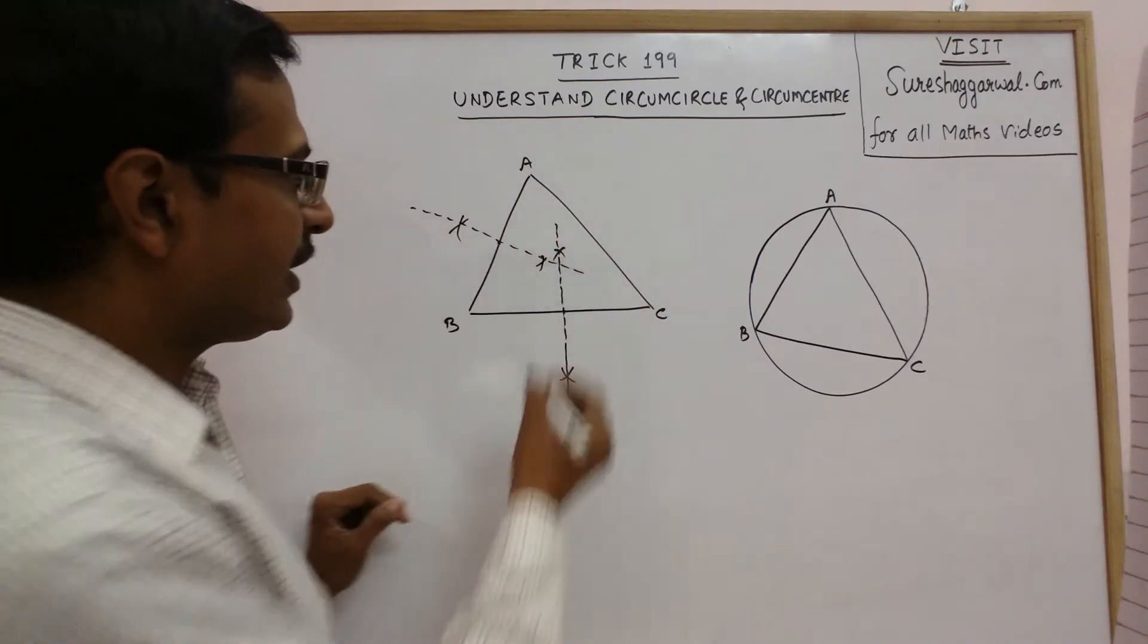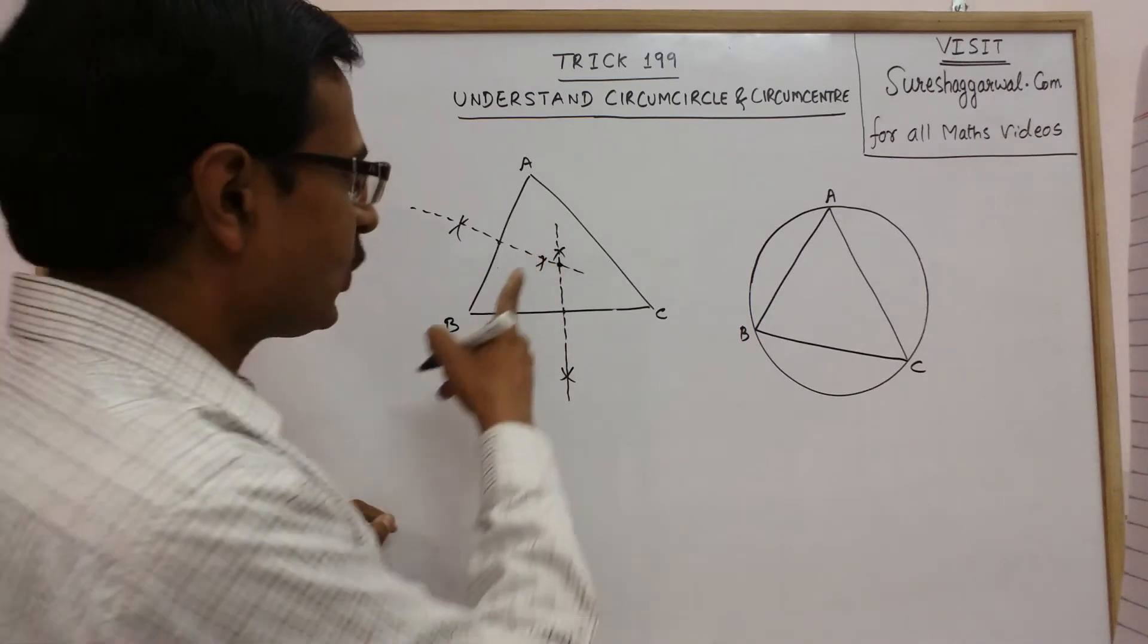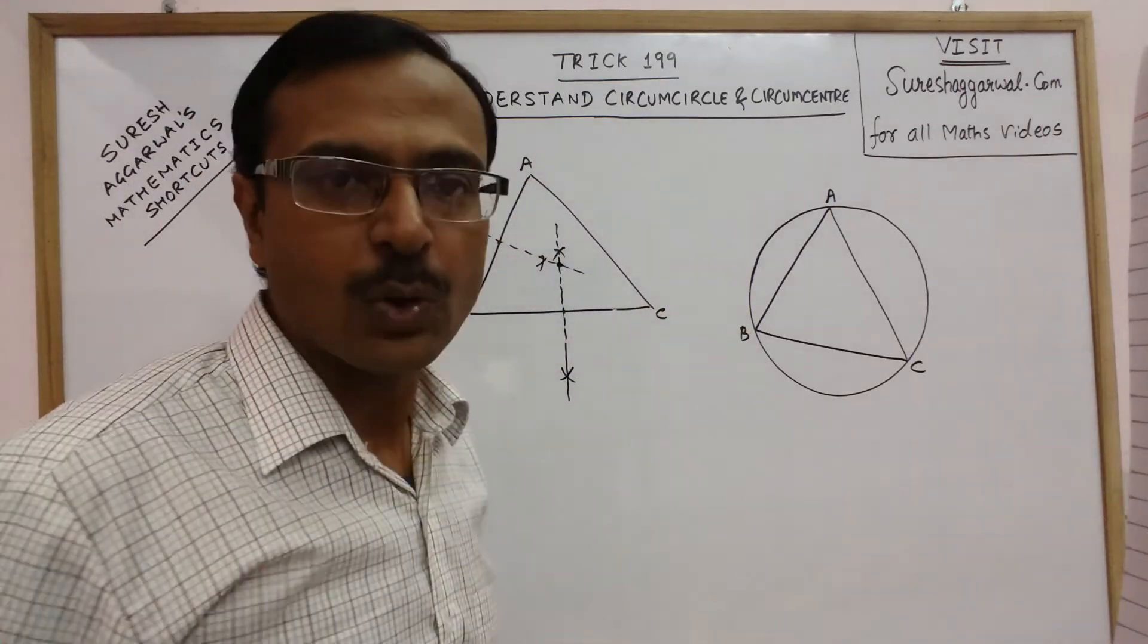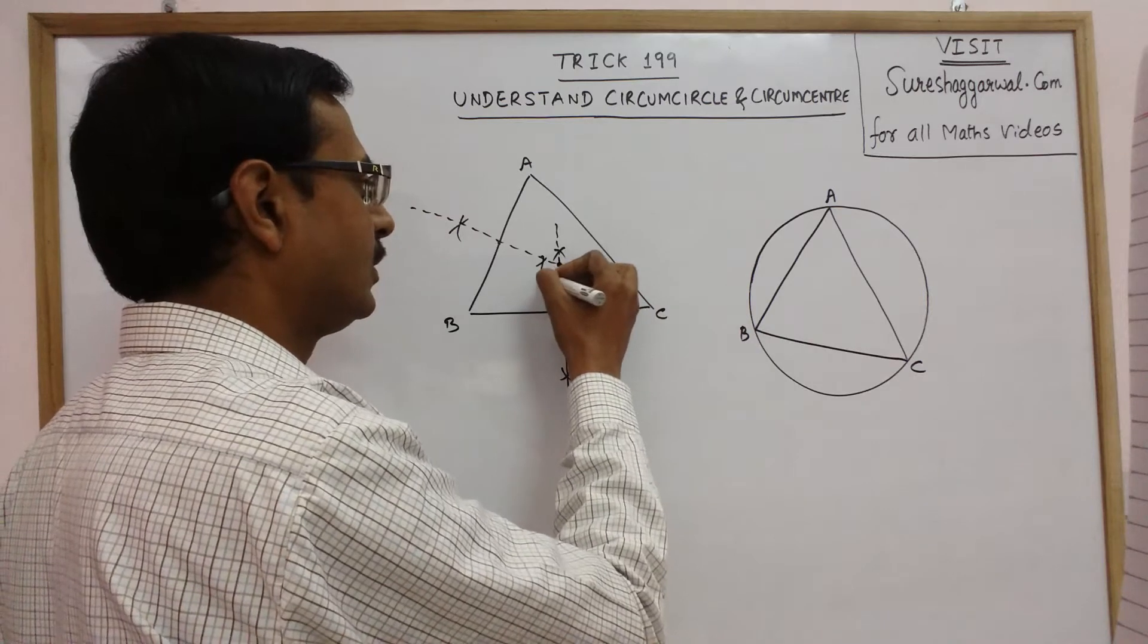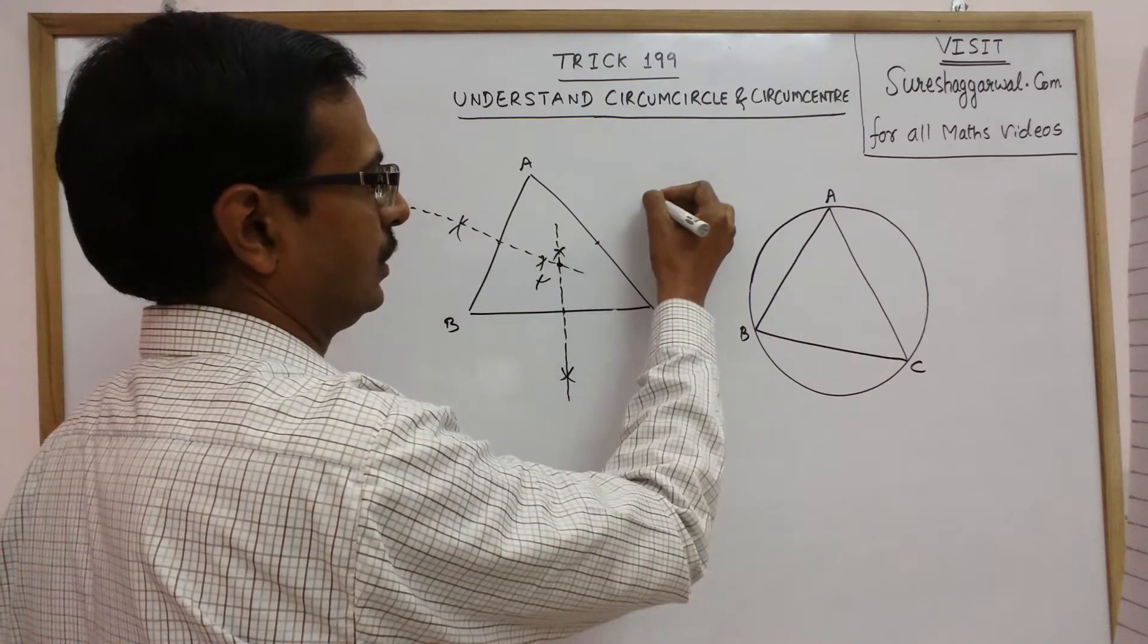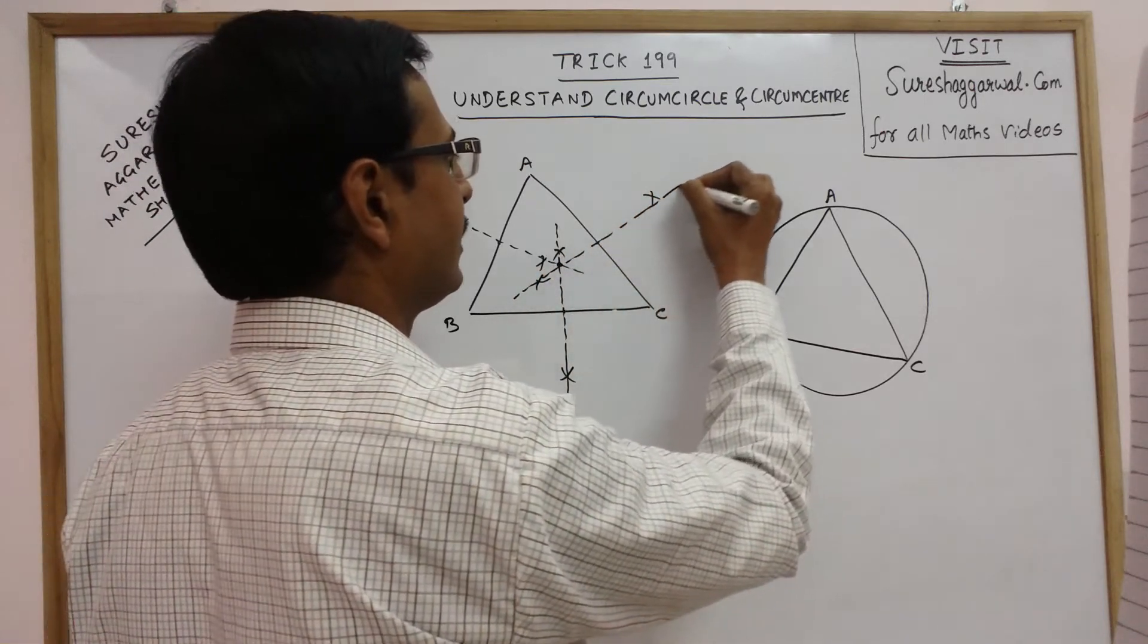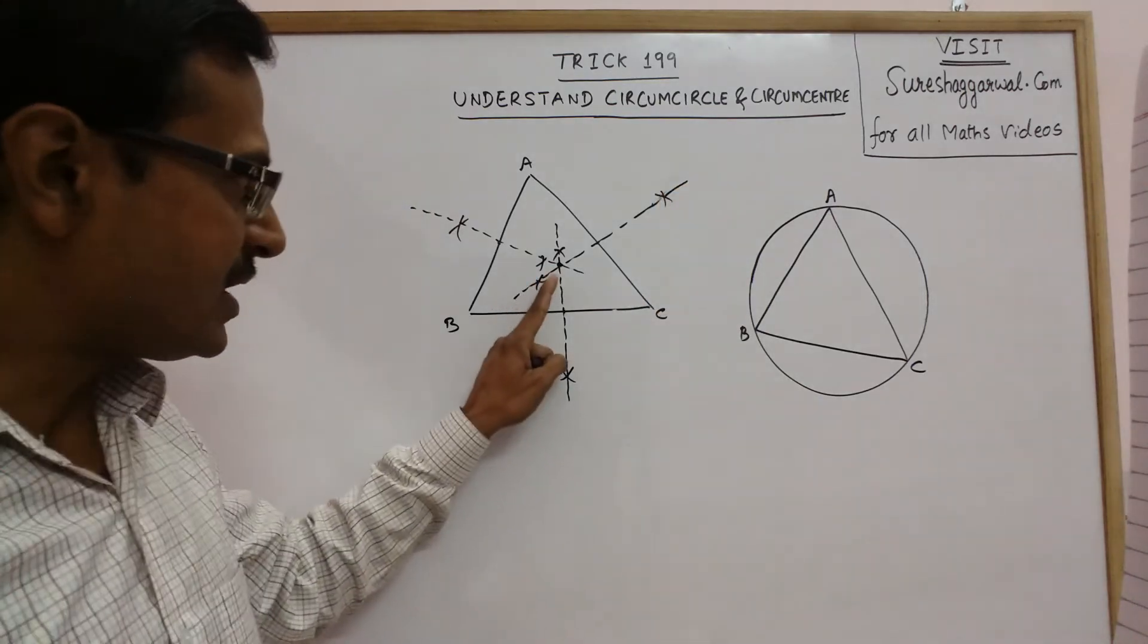The point where these two perpendicular bisectors are intersecting, this point will be common for the third bisector also. If I draw the perpendicular bisector of AC, this third perpendicular bisector will automatically pass through this point.